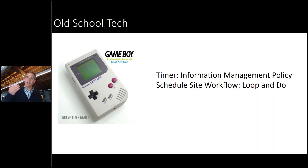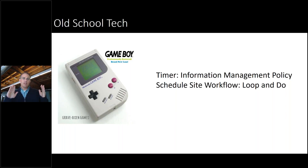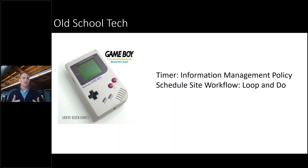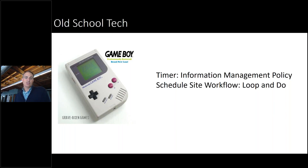For example, a document last modified is my start period, and it says wait one year. In a year from now, it would trigger a workflow or some kind of operation to then review the document, approve it, and get it reviewed. Think of a standard operating procedure, an SOP — let's get it reviewed on an annual basis. I've used that IMP to make that happen. Super simple.